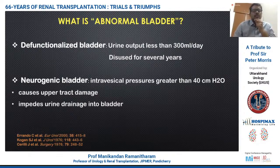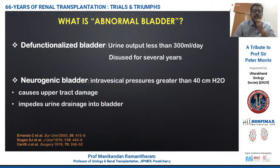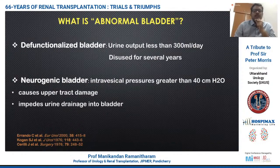The next group is patients diagnosed with neurogenic bladder, where urodynamic characteristics suggest intravesical pressures greater than 40 centimeters of water, thereby increasing damage to the upper tract and impeding urinary drainage to the bladder. These are the two basic groups of patients who constitute abnormal bladders.